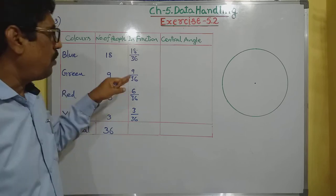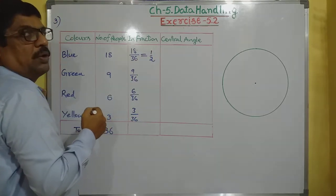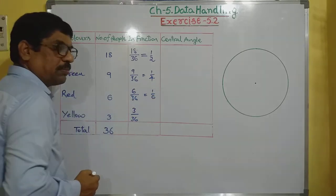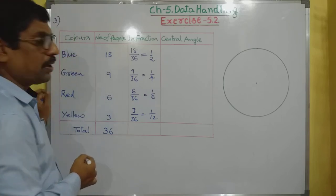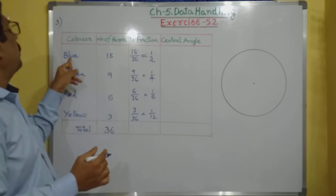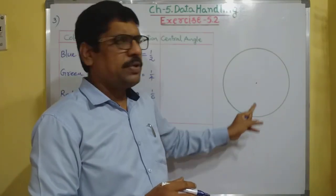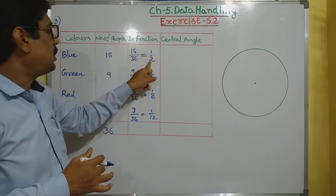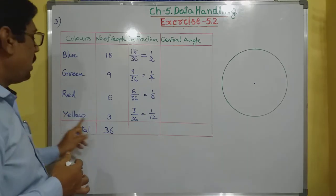First simplify the fractions. Blue: 18/36 = 1/2. Green: 9/36 = 1/4. Red: 6/36 = 1/6. Yellow: 3/36 = 1/12. So the part of the circle for blue is 1/2, green is 1/4, red is 1/6, and yellow is 1/12.